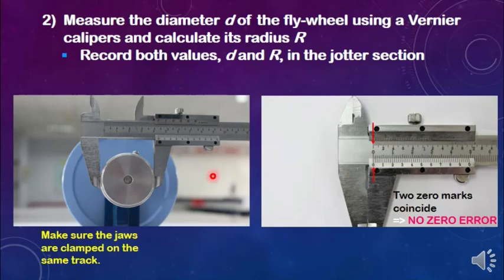Then we use it to measure the diameter of the axle. Make sure the jaws are clamped on the same track. Then we tighten the screw to fix the position of the jaws. Then only we take the reading of the diameter of the axle.